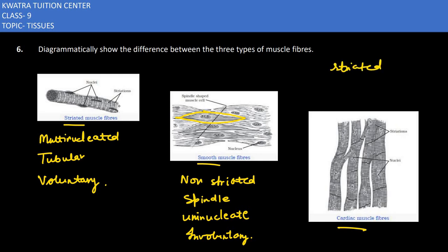The other thing is branching. The other thing is branched. Now we have to say uninucleate because in one cell there is one nucleus. Uninucleate, branched, striated, and the third thing is involuntary.